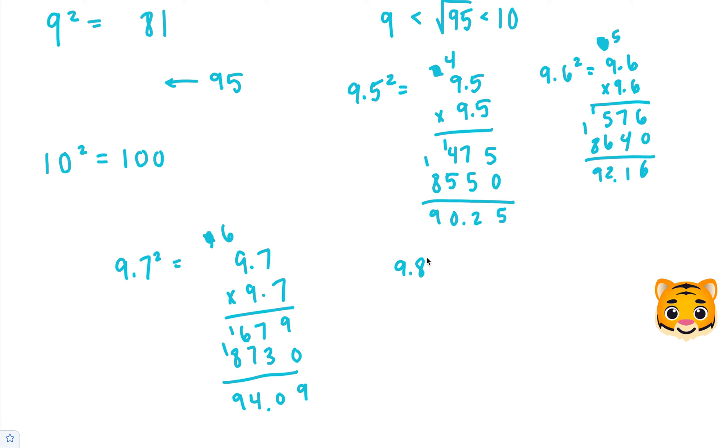Let's try 9.8 just to make sure. 9.8 squared is 9.8 times 9.8. 8 times 8 is 64, carry the 6. 9 times 8 is 72, plus 6 is 78, add our 0. 9 times 8 is 72, carry the 7. And then 9 times 9 is 81, plus 7 is 88. When we add these together, we end up getting 96.04.